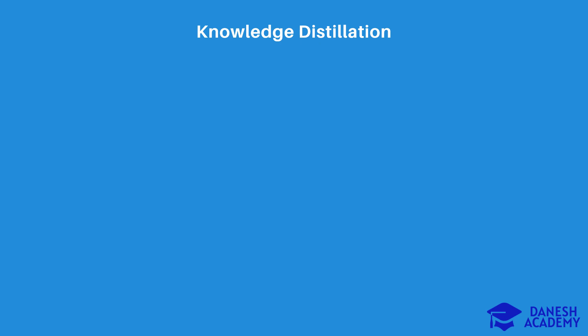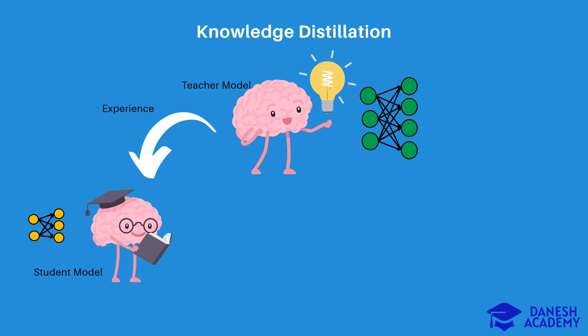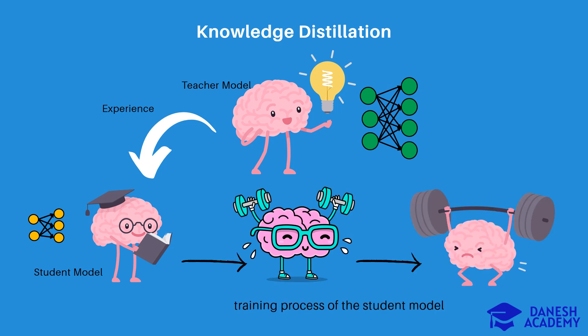Knowledge distillation refers to transferring the wisdom or experience of a teacher model to a student model. The teacher model is a large and well-trained model trained with a great deal of data, and we have a student model which is smaller and aims to use hints of the teacher model and imitate it to learn more efficiently, compared to the independent scenario in which the student model learns without the teacher's assistance.